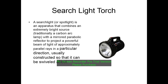A searchlight or spotlight is an apparatus that combines an extremely bright source, traditionally a carbon arc, with a mirrored parabolic reflector to project a powerful beam of light in an approximately parallel direction, usually constructed so that it can be swept around.